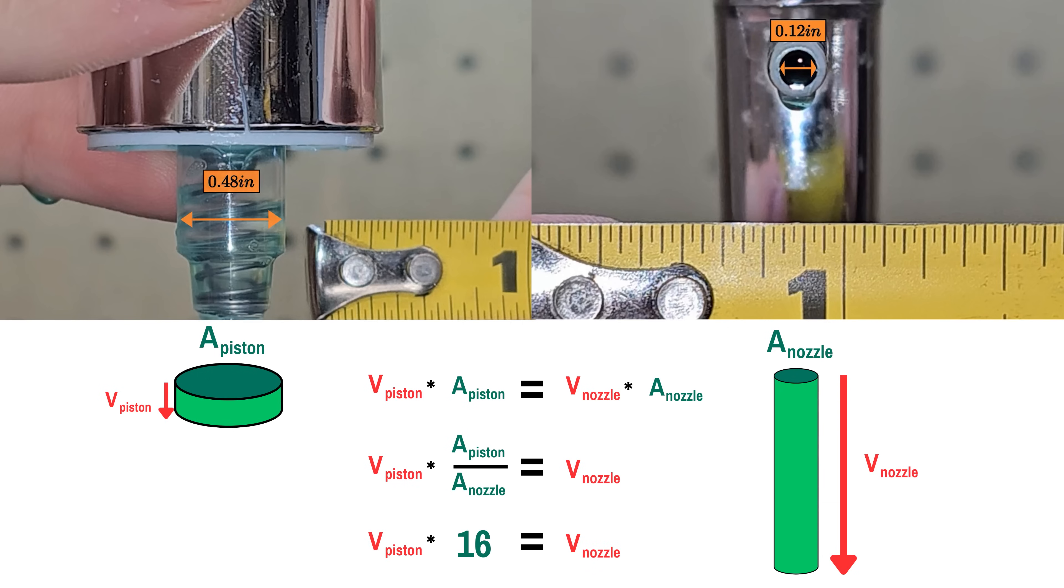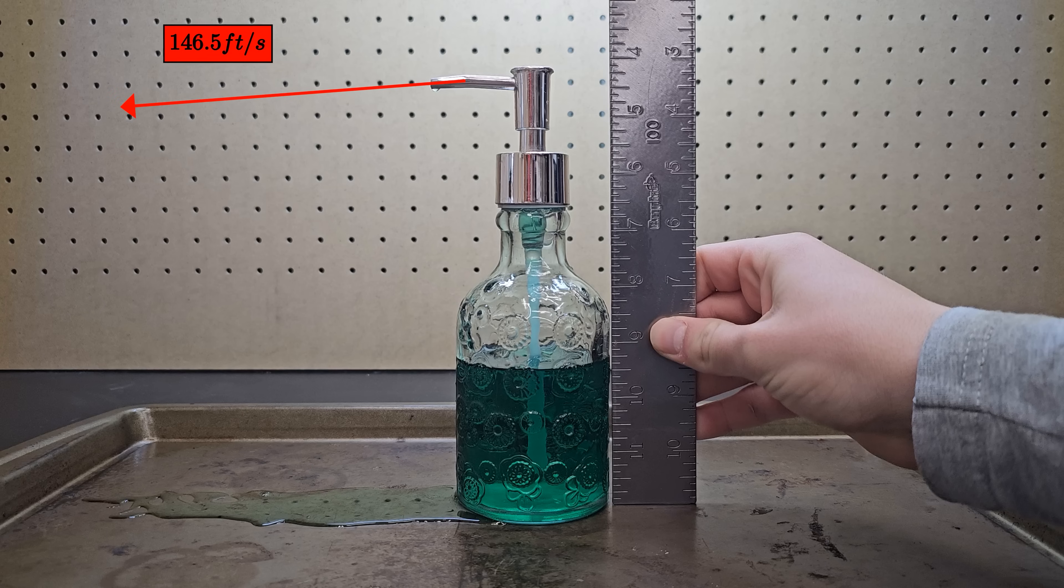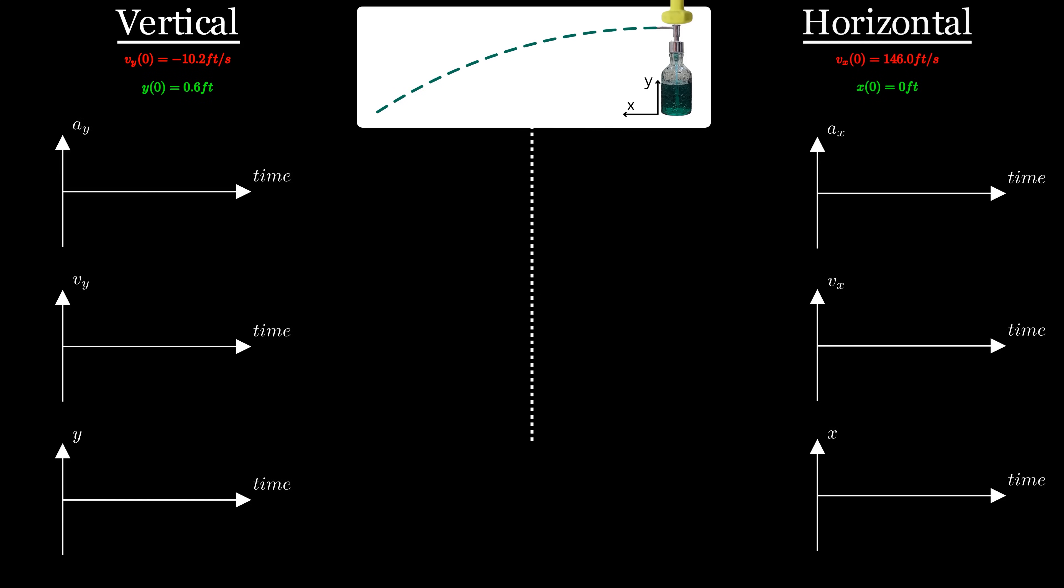And we'll assume the dumbbell has so much momentum that the piston will just move at the speed of the dumbbell at impact, which was calculated earlier to be 9.15 feet per second. That means the soap should be launched out of the dispenser at 146.5 feet per second. Based on the geometry of the dispenser, the soap will be launched from about 0.6 feet off the ground and four degrees downward. With this angle, you can split the initial launch velocity up into its vertical and horizontal components, and then we'll use kinematics to get our final answer.